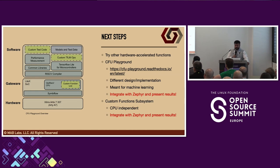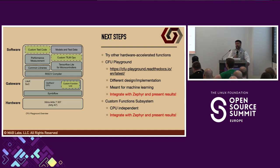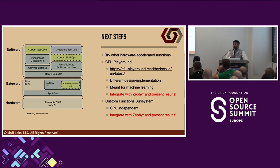To summarize next steps: right now the design uses a pretty simple block cipher mainly for evaluation purposes, so I want to try other hardware-accelerated functions. Tim Callahan at Google spearheaded what's called the CFU Playground — it doesn't use the NeoRV32 implementation of RISC-V, it's a completely different implementation, but it leverages a CFU and is really meant for machine learning with a lot of functionality. I want to play with that and see how Zephyr can start integrating with it to explore opportunities for machine learning.